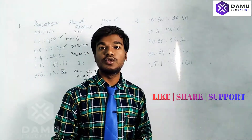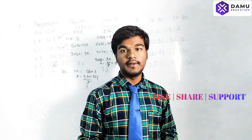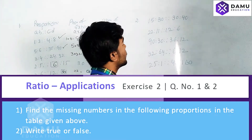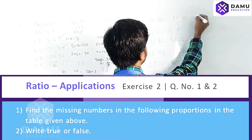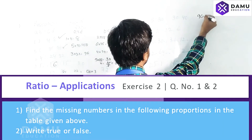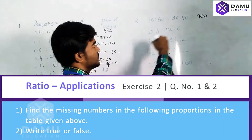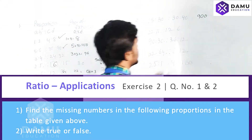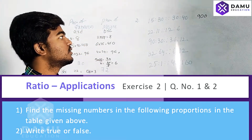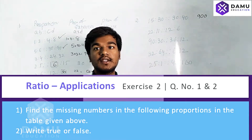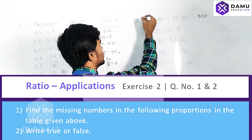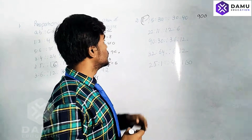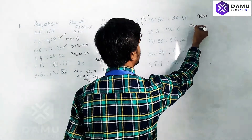The second question asks us to check whether the given ratios are in proportion — true or false. First, we check product of means and product of extremes. Product of means: 9 × 100 = 900. Product of extremes: 15 × 4 = 600. The two are not equal, so this is false.